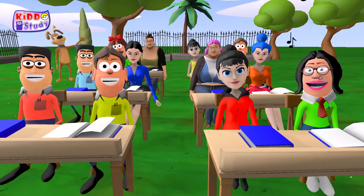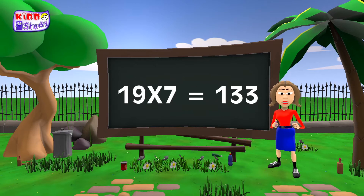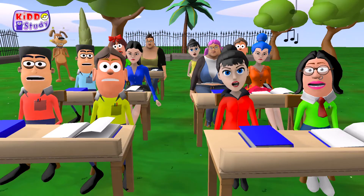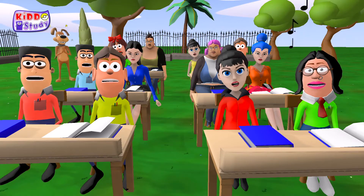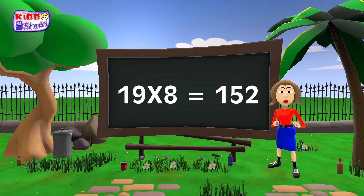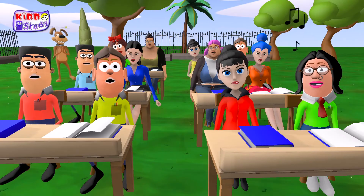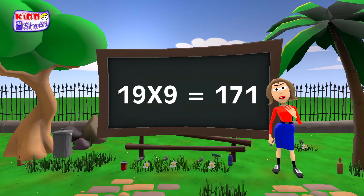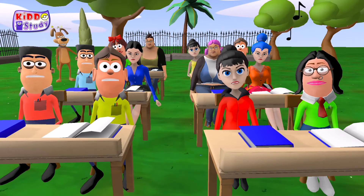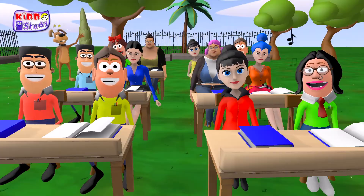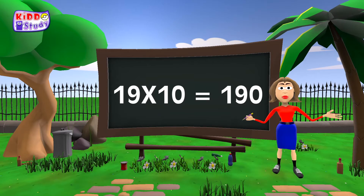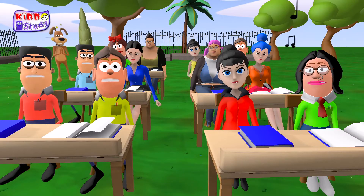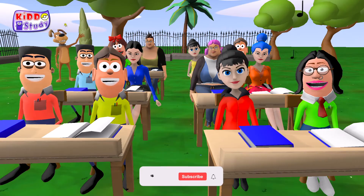Nineteen 7s are One Thirty-three. Nineteen 8s are One Fifty-two. Nineteen 9s are One Seventy-one. Nineteen 10s are One Ninety.